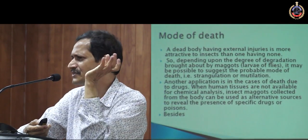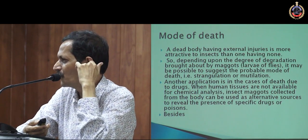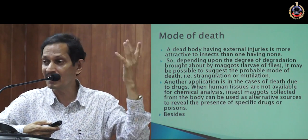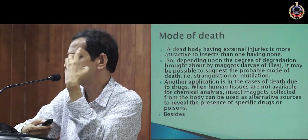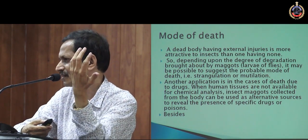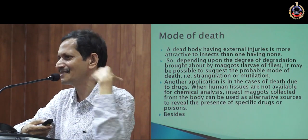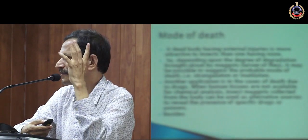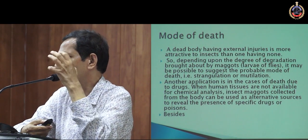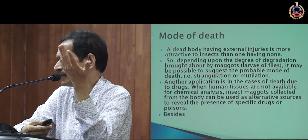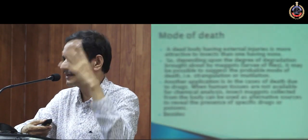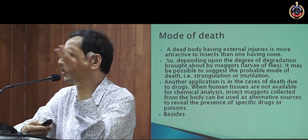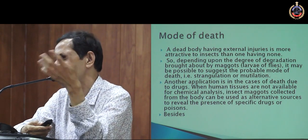Mode of death — the use of entomology here is very limited. Still, a dead body having external injuries is more attractive to insects than one having none. If you see the density of insects is much more than expected, but it was a decayed body and you can't see injuries, you can infer that the death was committed using some knife or similar object. If the person was strangulated, the number of insects will be less. These are all supporting clues, not exclusive ones.